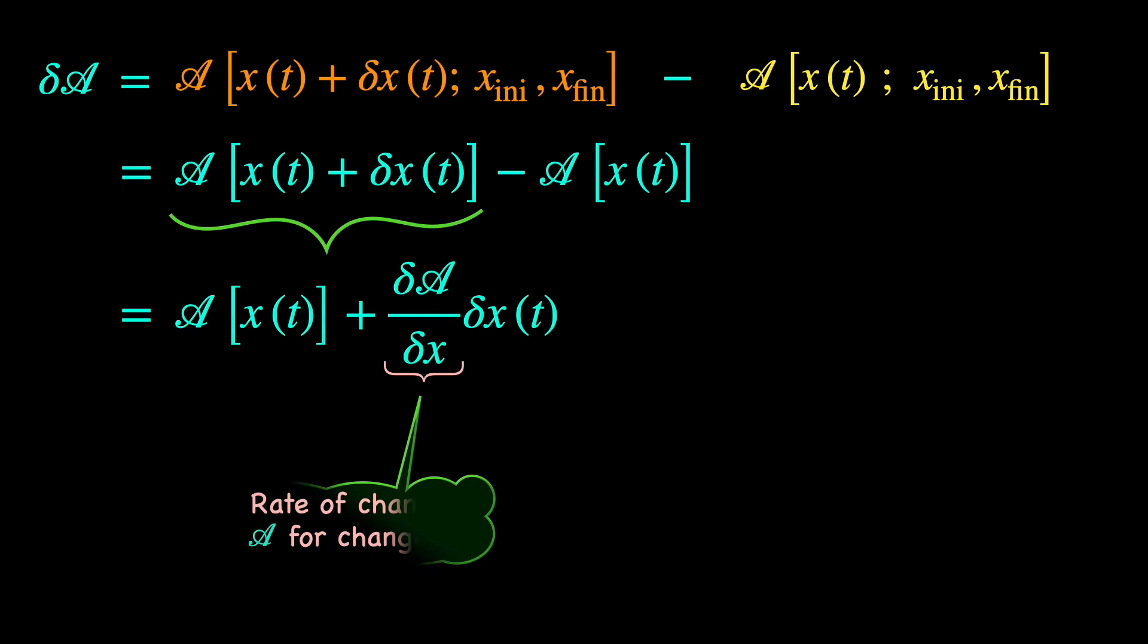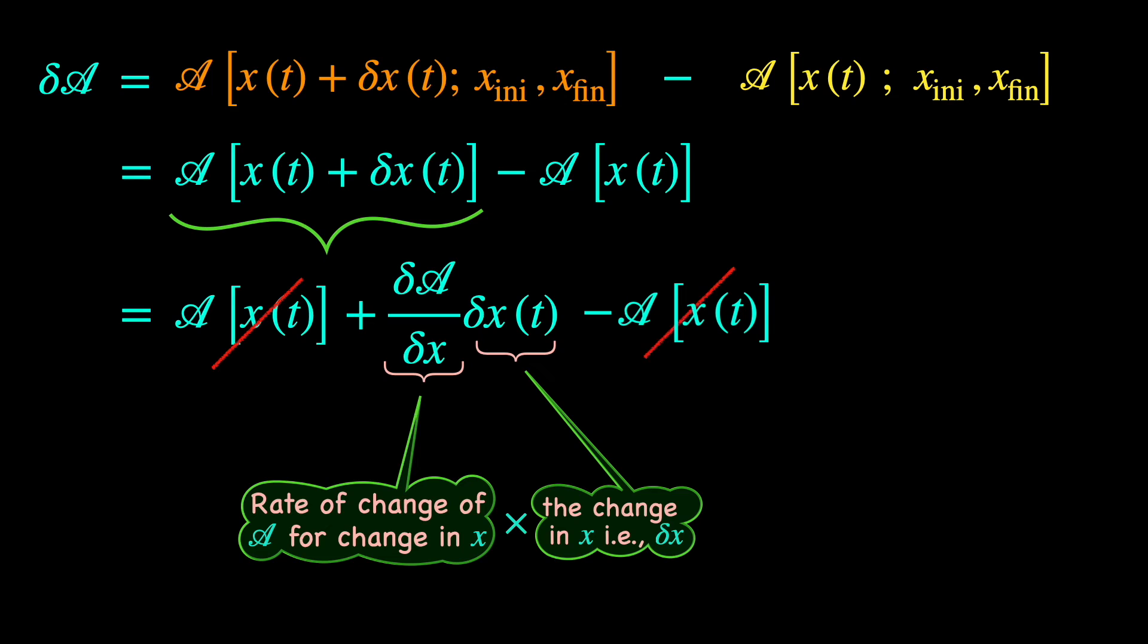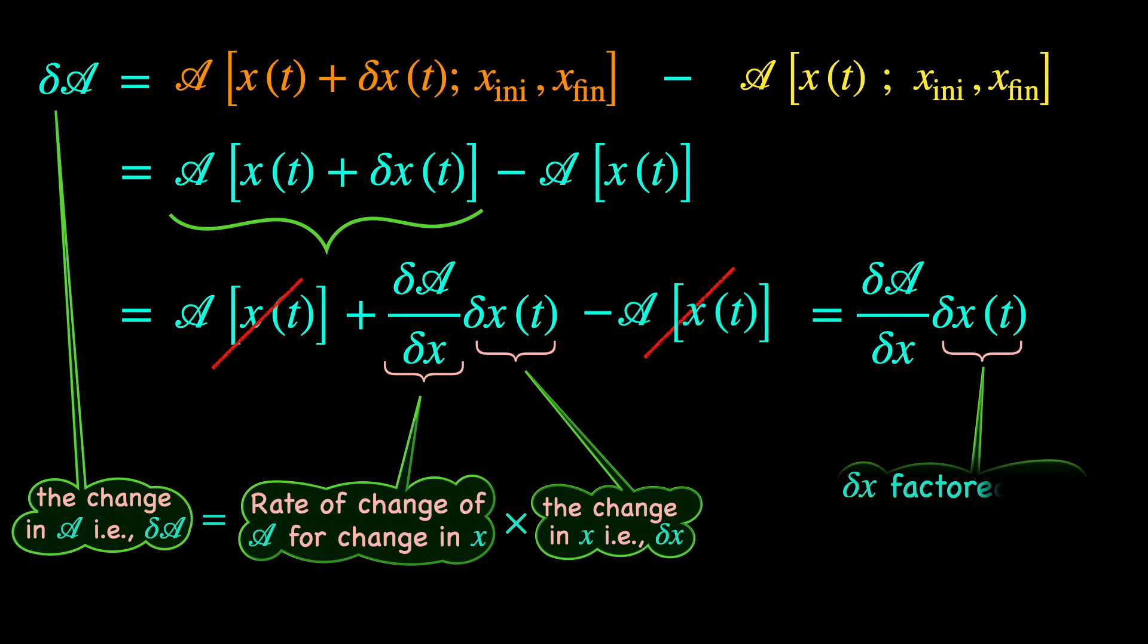Basically this is the change in the action delta A induced by the infinitesimal variation delta x(t) of the generic path x(t), calculated with an accuracy of up to first order in the variation delta x(t). Again, change in the action caused by the slight variation of the path calculated to the accuracy of first order in the path variation.